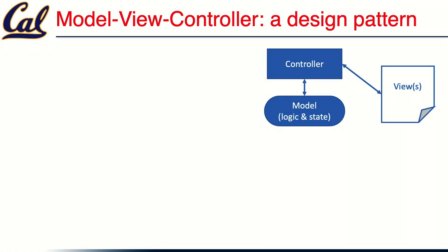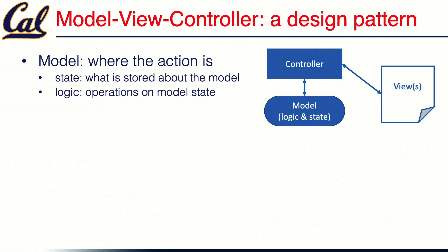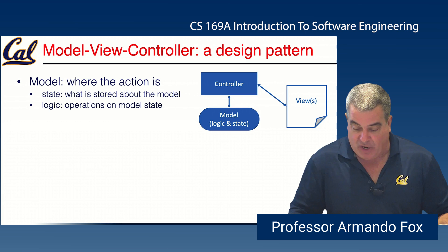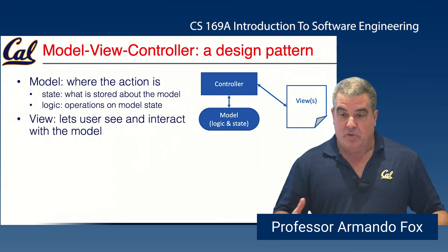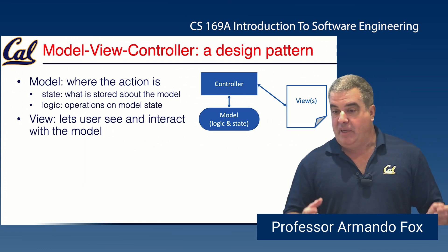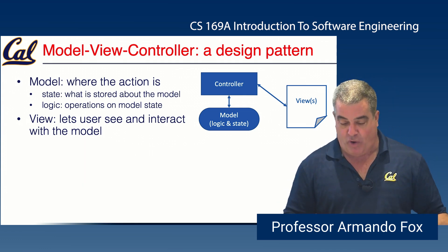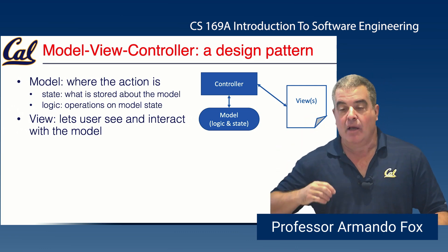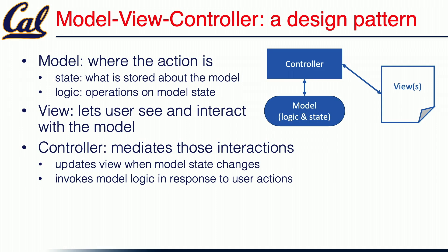That's the motivation for Model View Controller, a design pattern that comes out of the HCI literature. It is a way of thinking about the organization of apps that have an interactive user component. The three components are the controller, the model, and the view. The model is where the action is — it's both the state (what information has to be stored for the program to do its job) and the logic (what operations are allowed on that model state). The view is the thing that lets users see and interact with the model. The view could be a command line, a graphical mouse-and-window interface, or even a virtual reality headset — it's the part that has direct contact with the user.